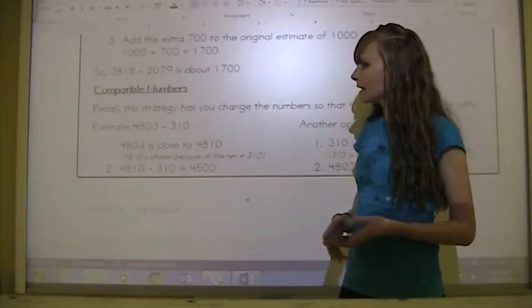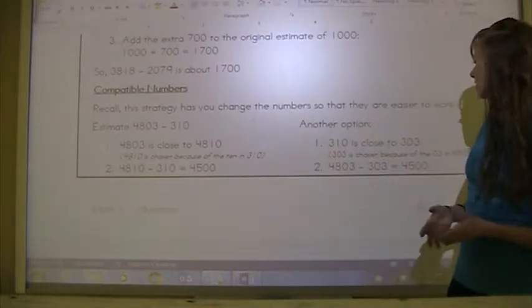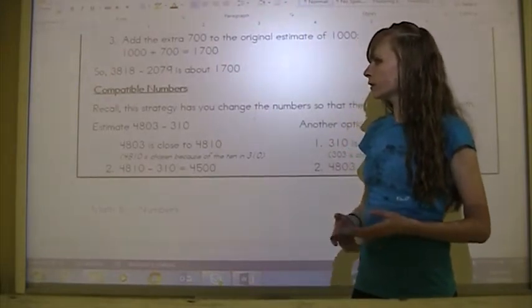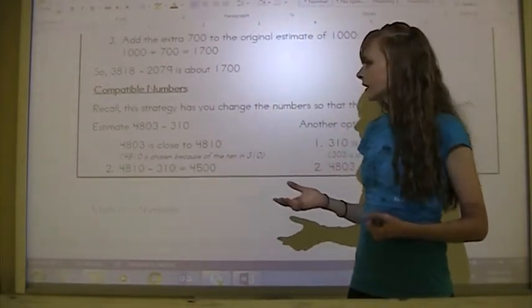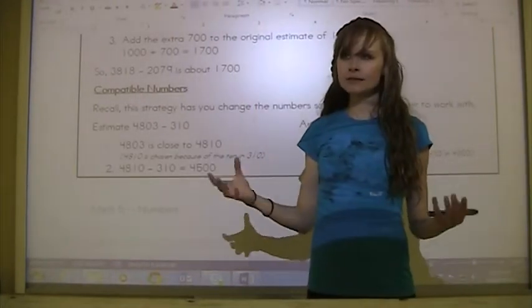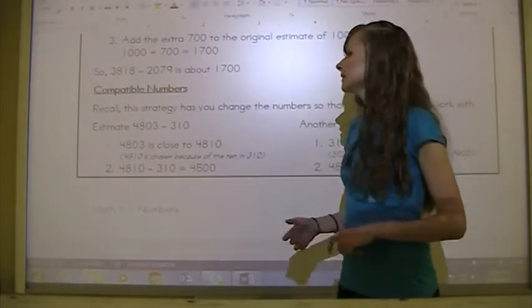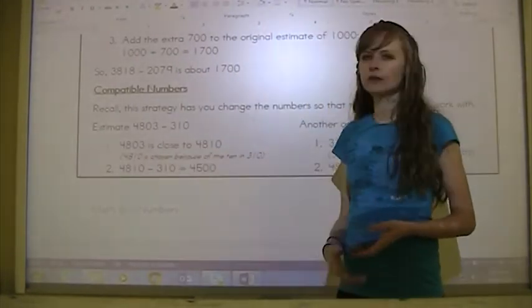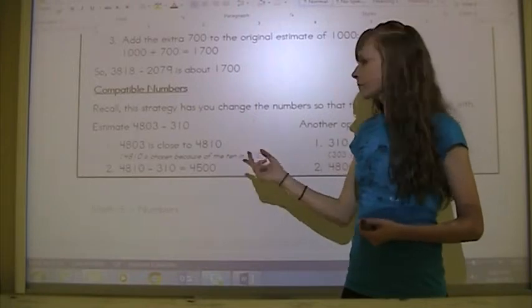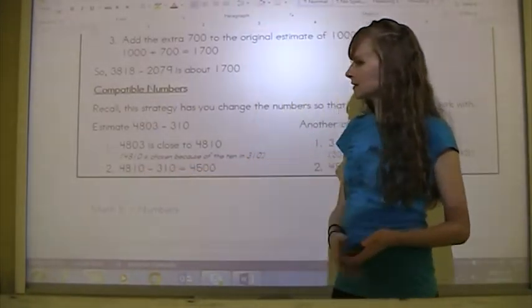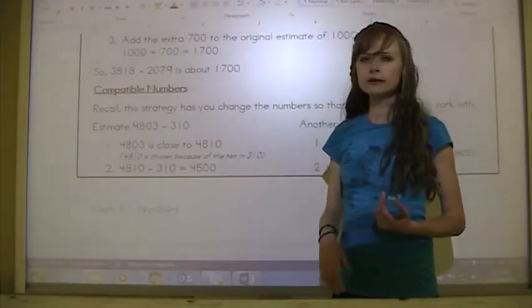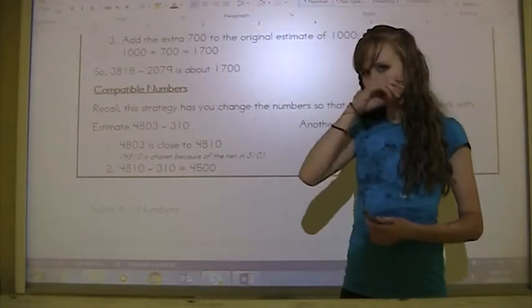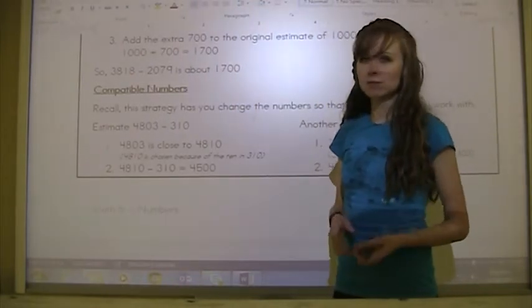Then there's compatible numbers. This strategy has you change the numbers so they are easier to work with. If I had the example 4,803 minus 310, 4,803 is close to 4,810. With subtracting, when you have the same number subtract the same number, it equals zero. We want this to be 10 minus 10, so I would change 4,803 to 4,810. Then you go 4,810 minus 310, so the tens cancel each other out. You're really just subtracting the 3 from the 8, and the 4 stays the same. 8 minus 3 is 5, and you're left with 4,500. That's a pretty accurate estimate.